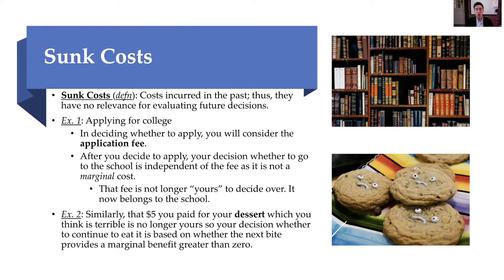Another example: you go to a restaurant, pay $5 for their dessert, and it's terrible. That $5 is a sunk cost — you no longer own those $5; it's not yours anymore. Now you own the cookies. Your decision whether to take another bite is now dependent purely on your marginal benefit. As long as the marginal benefit is greater than zero, you're going to take another bite.